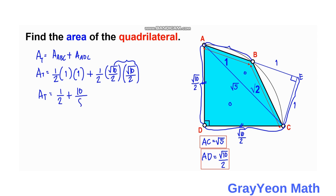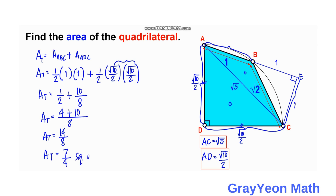Using a common denominator of 8: 8/2 = 4, so ½ = 4/8, and 10/8 stays. That gives 4/8 + 10/8 = 14/8. Simplifying by dividing numerator and denominator by 2, the total area is 7/4 square units.